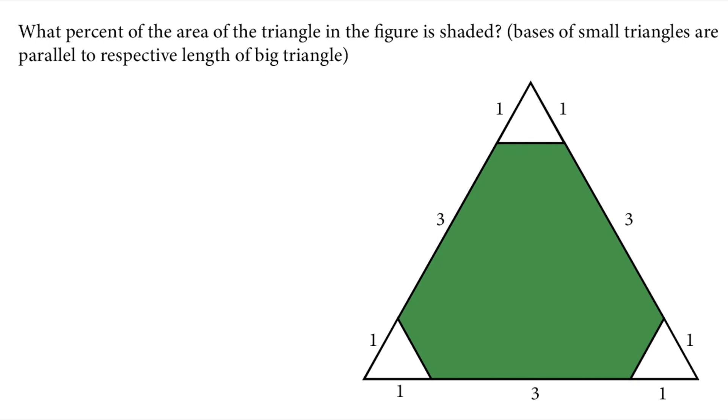In this video we will be solving this geometric question. The question is asking what percent of the area of the triangle in the figure is shaded. So we need the ratio of the shaded green area to the big triangle. Since we're asked in terms of percent, once we find this ratio we will write it with a denominator of 100. This question can be solved in many different ways.